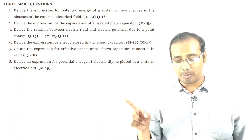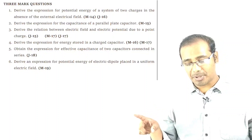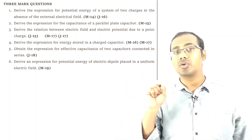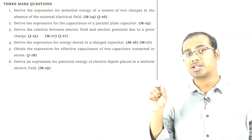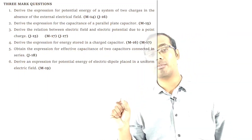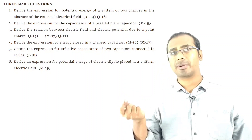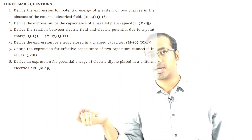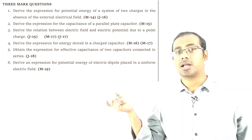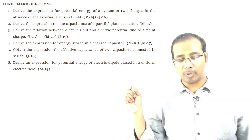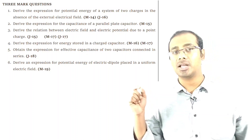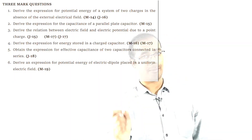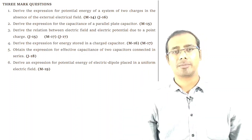Last important 3 marks question: derive the expression for potential energy of an electric dipole placed in a uniform electric field — derive the result −pE cosθ.